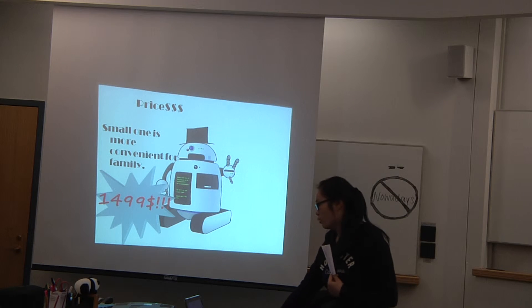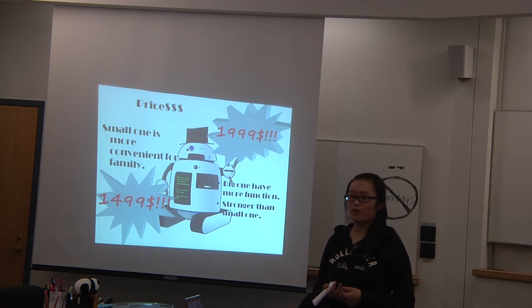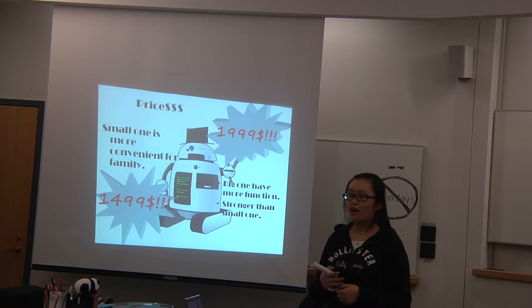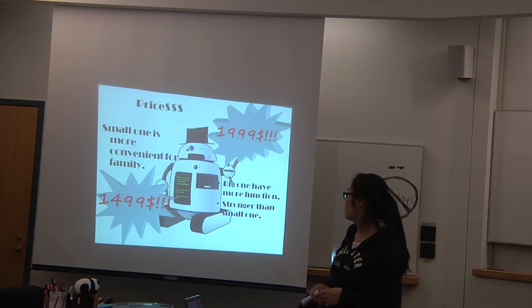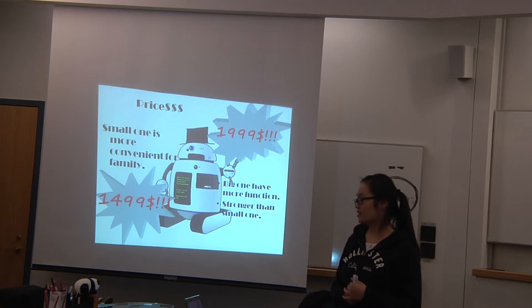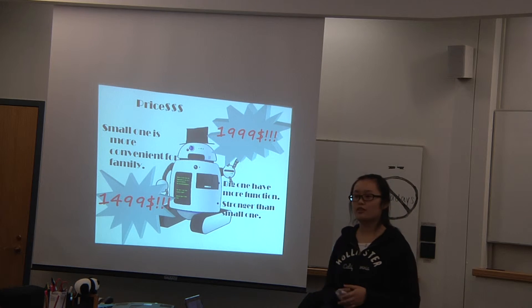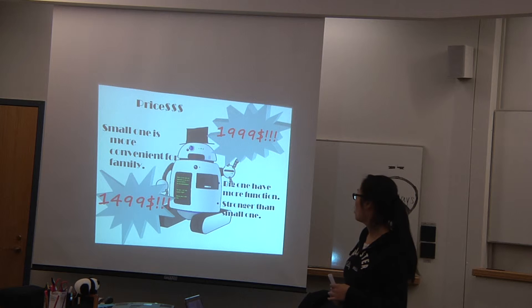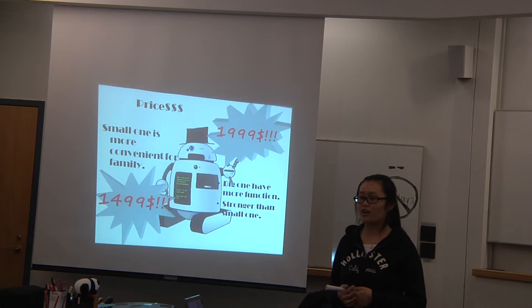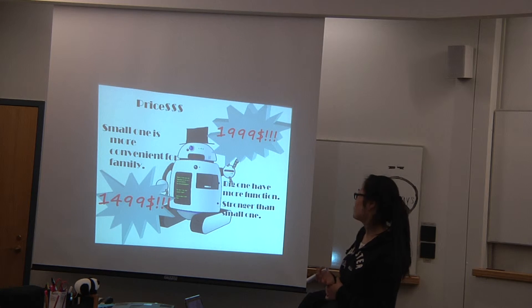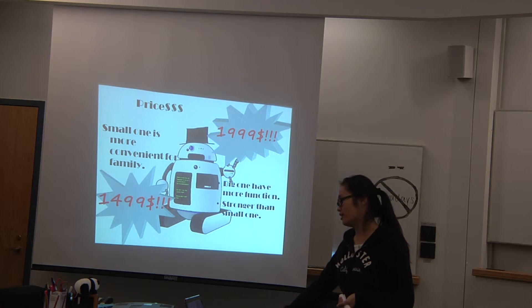We have two different size robots. Many people think the big one robot may be too big for the family. Their home doesn't have enough space to let the robots go through. So we think the small one is more convenient for family. And it only has $1,499. The big one has more functions than the small one. He's stronger and has a lot in his hands and can protect people. It costs $1,999.